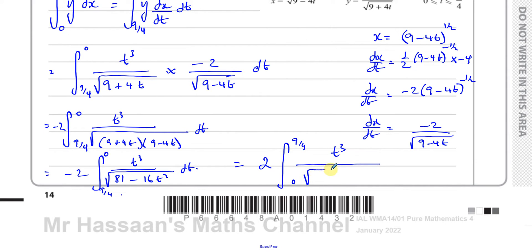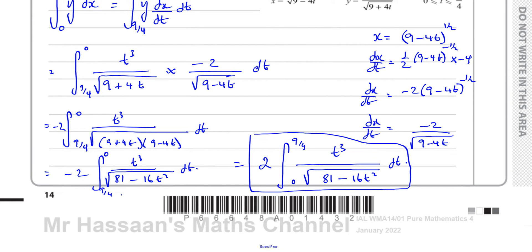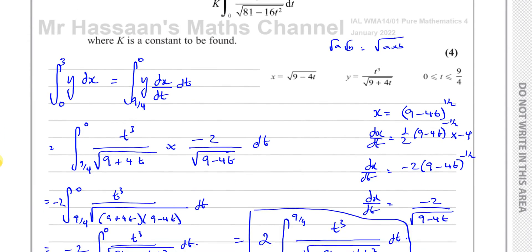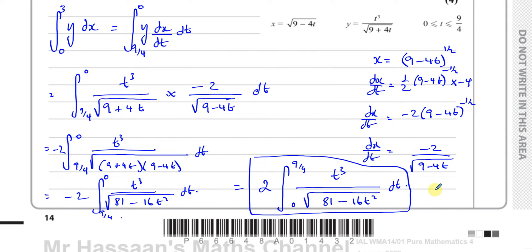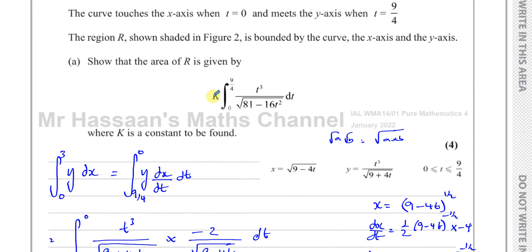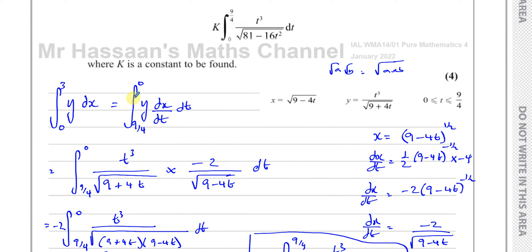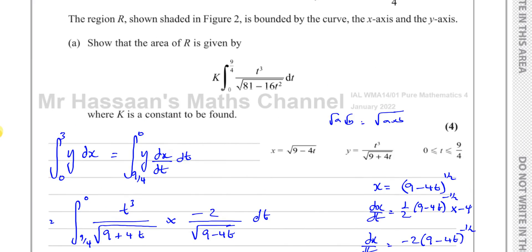We end up with 2 times the integral from 0 to 9/4 of t³ over √(81 − 16t²) dt — exactly the form required. So k = 2. If the limits were the other way around that would give minus 2 here, so it's very important to put the limits in the right place to get the fully correct answer. Thank you to one of the viewers for pointing that out.